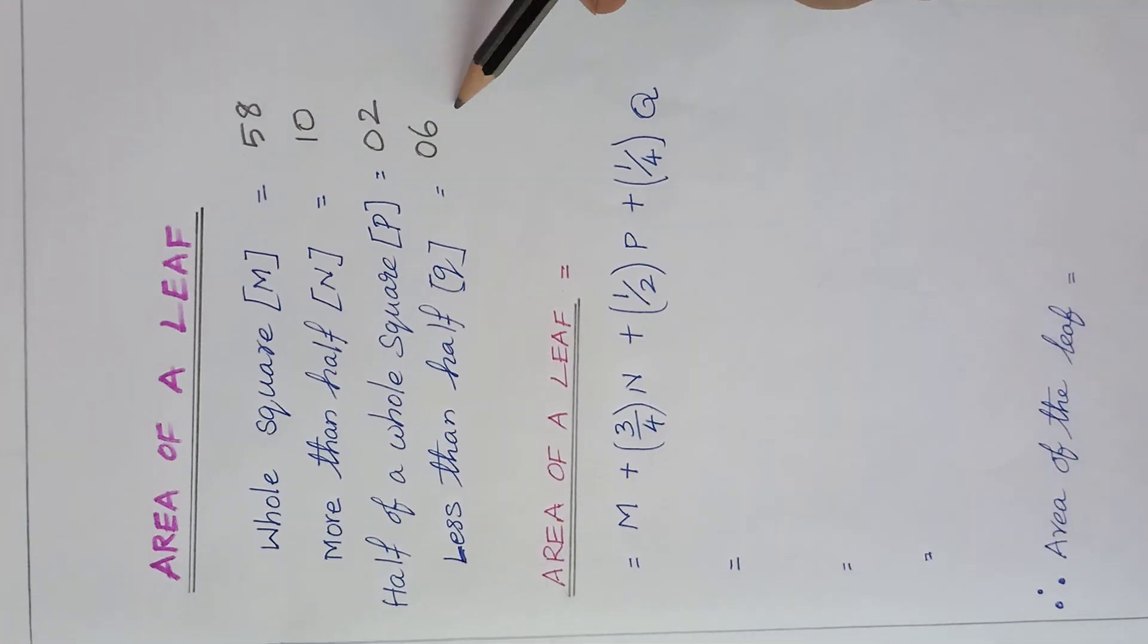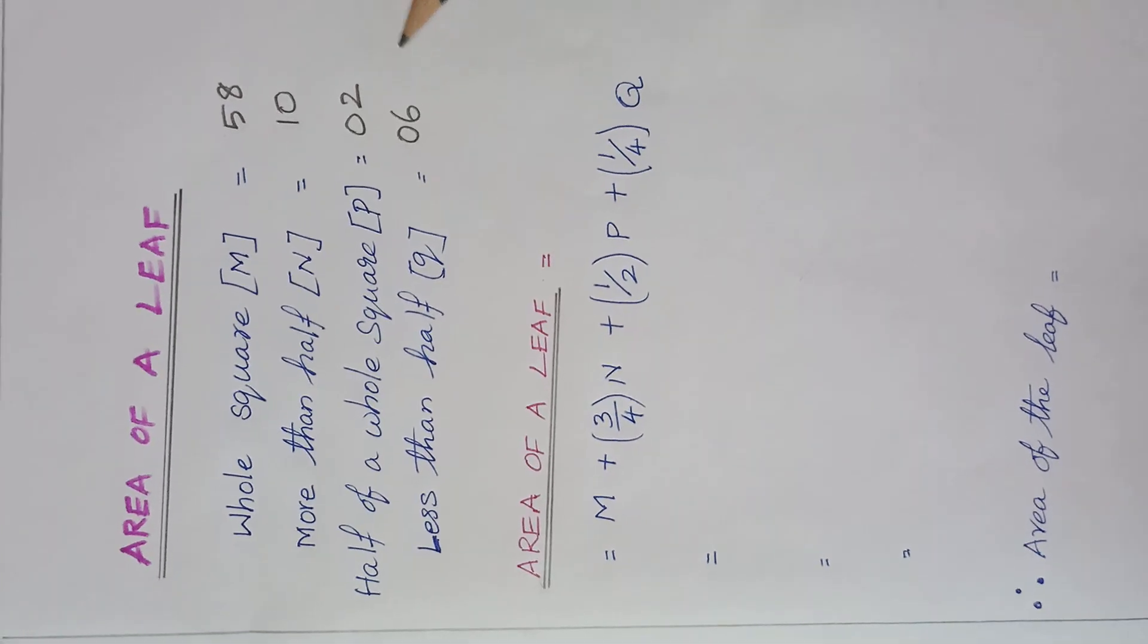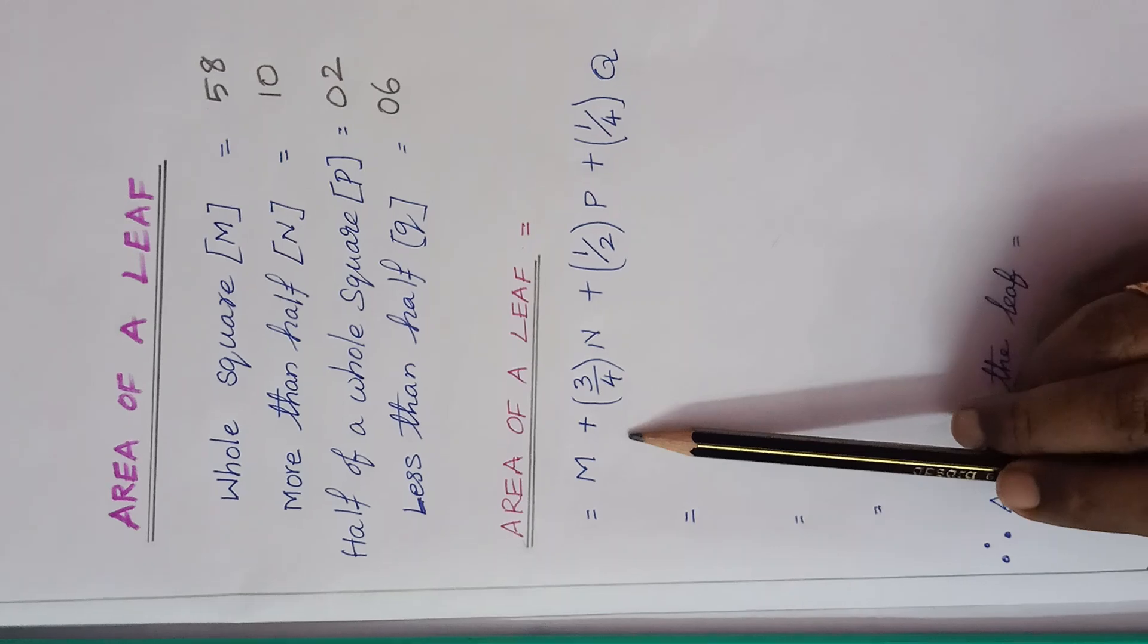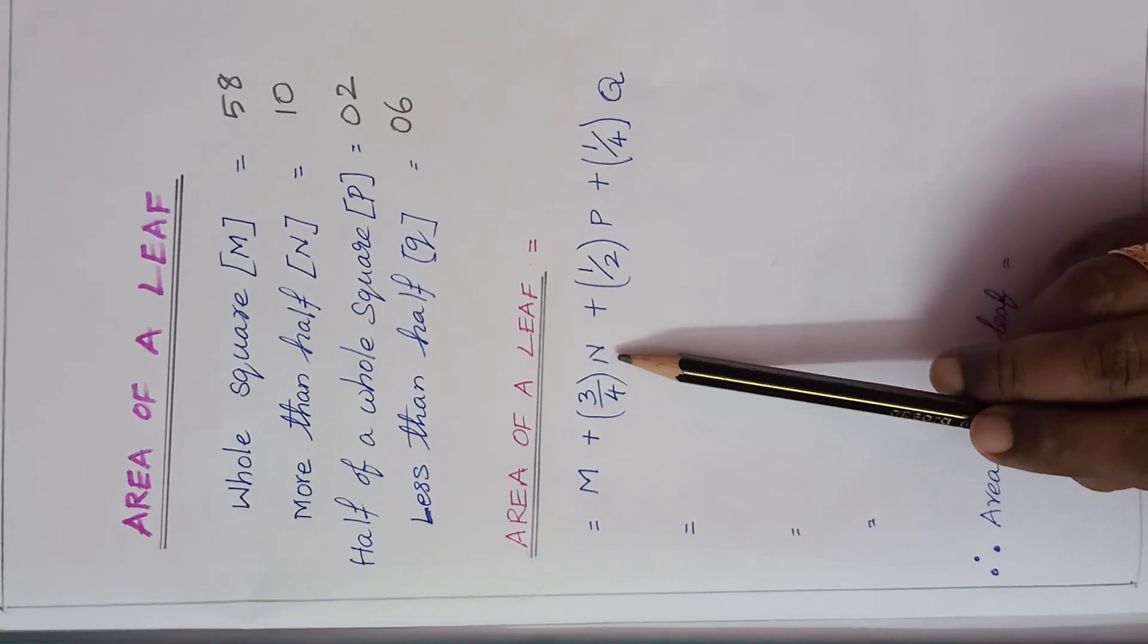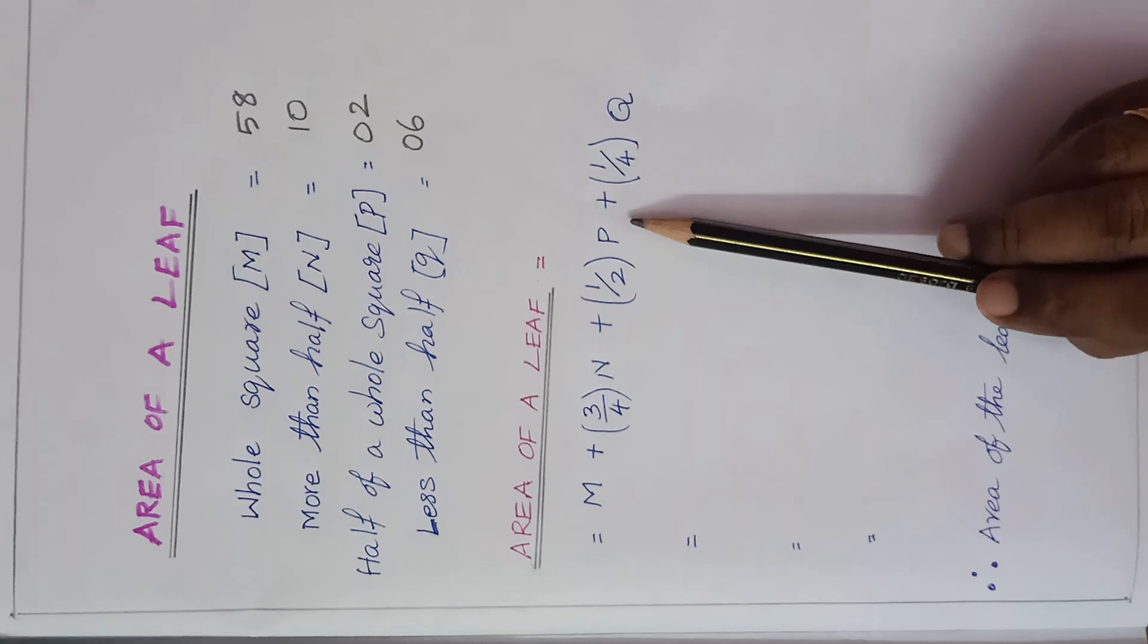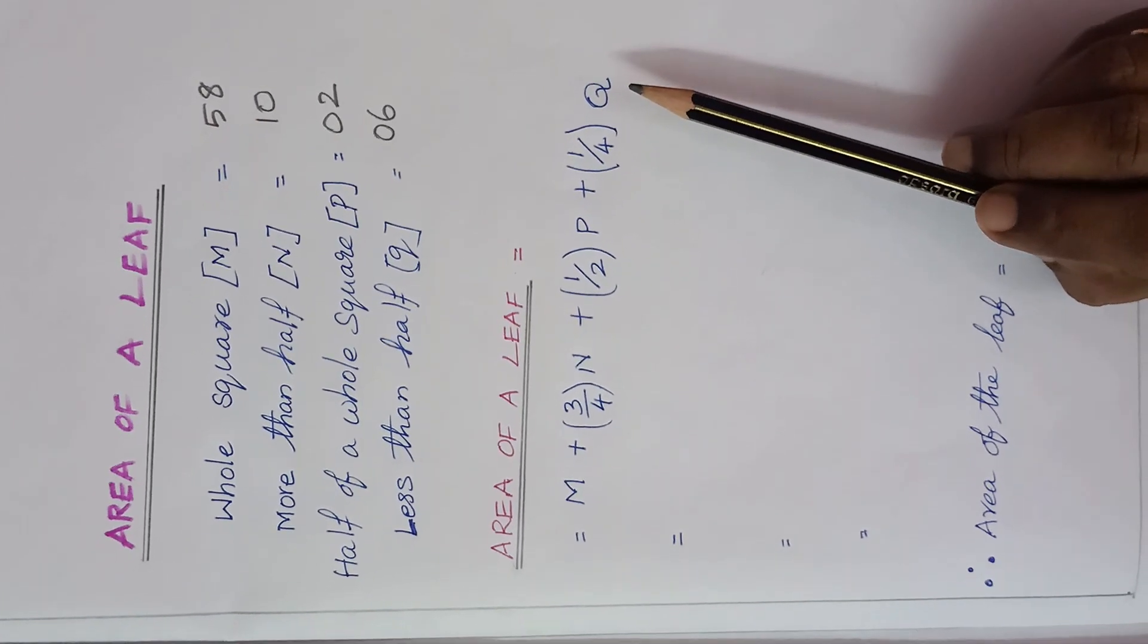By using these values, we are going to find out the area of a leaf with the help of this formula. The formula is M plus 3 by 4 into N plus 1 by 2 into P plus 1 by 4 into Q. Shall we start doing the calculation?